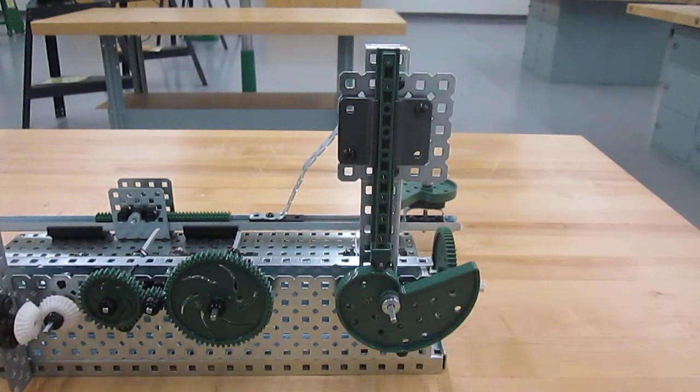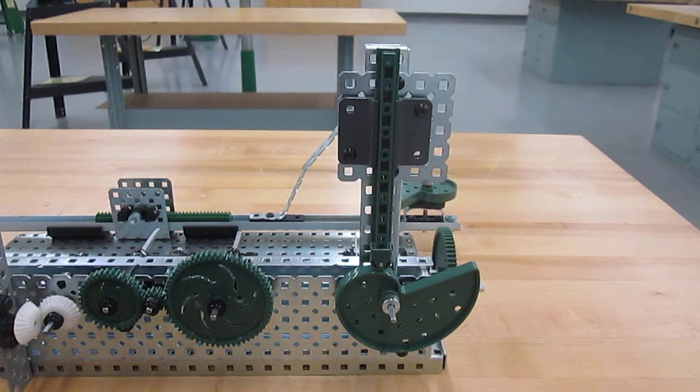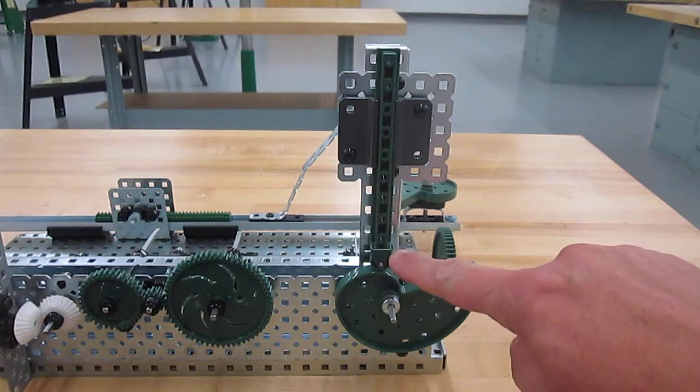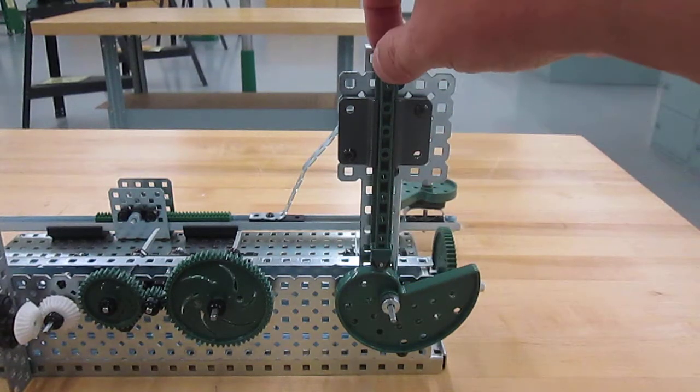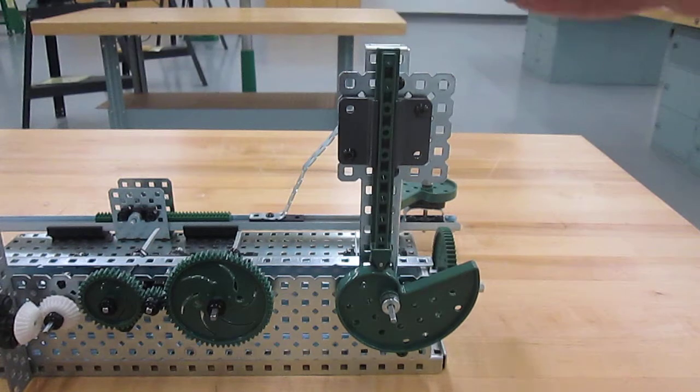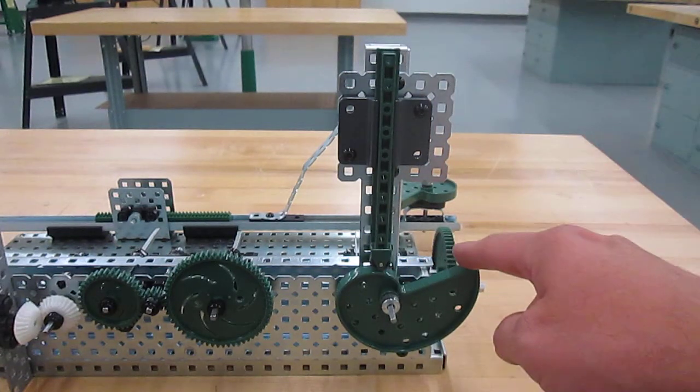When you turn your cam, what's happening is we have a rotary motion—this is our input. We have a reciprocating motion of the follower going up and down when it hits this spot of the cam, and it drops.